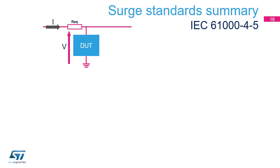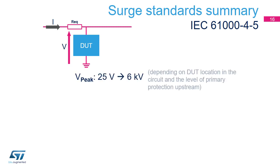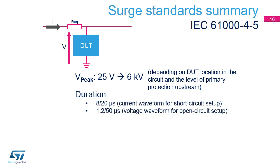To summarize what we have covered so far, the surge is specified with a peak voltage, which depends on DUT proximity from the lightning surge and the level of primary protection upstream in the circuit. Its duration is also specified, and this does not vary, being 8 over 20 microseconds for the current and 1.2 over 50 microseconds for the voltage. A resistance is specified according to how the protected DUT is connected.